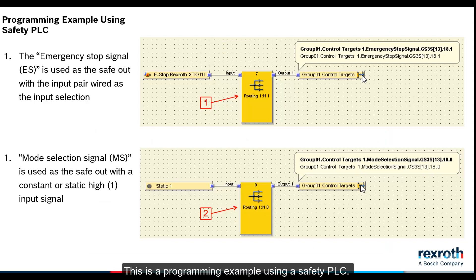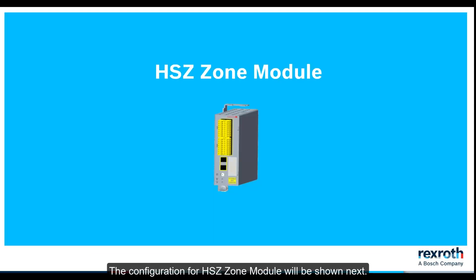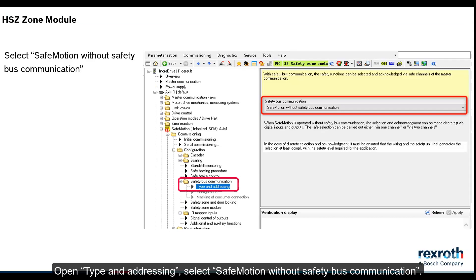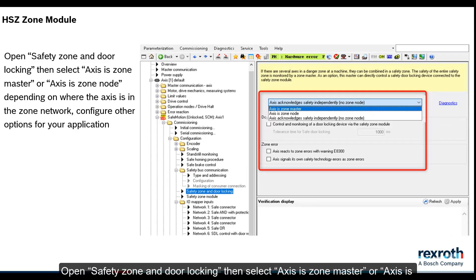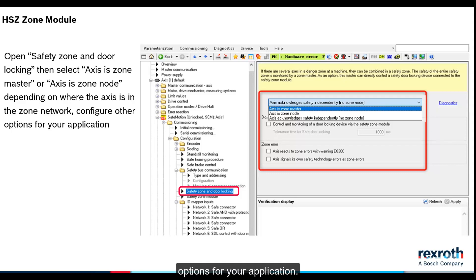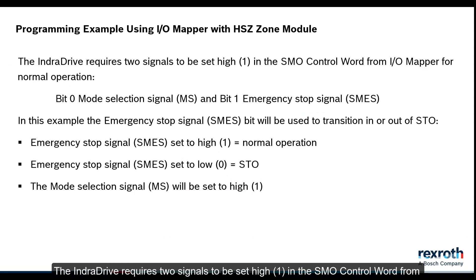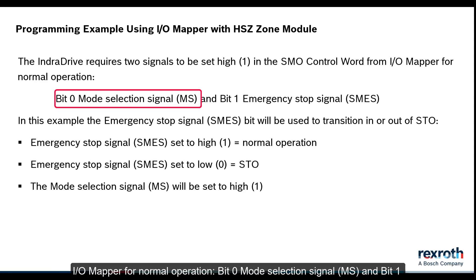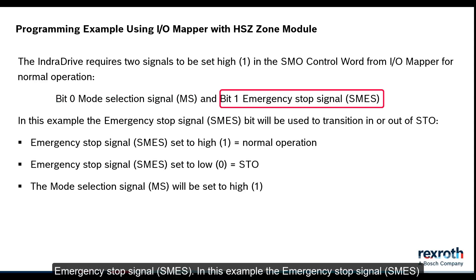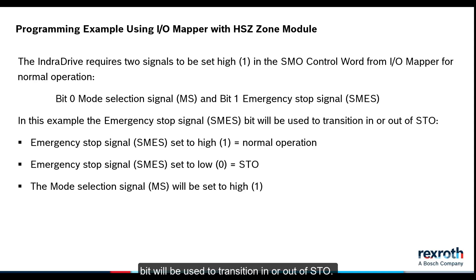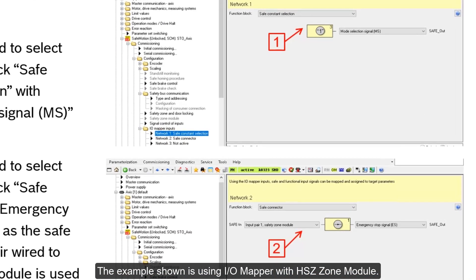This is a programming example using a safety PLC. The configuration for HSZ zone module will be shown next. Open type and addressing. Select safe motion without safety bus communication. Open safety zone and door locking, then select axis is zone master or axis is zone node, depending on where the axis is in the zone network. Configure other options for your application. The IndraDrive requires two signals to be set high in the SMO control word from IOMapper for normal operation: Bit 0, Mode Selection Signal MS, and Bit 1, Emergency Stop Signal SMES. In this example the SMES bit will be used to transition in or out of STO. The example shown is using IOMapper with HSZ zone module.